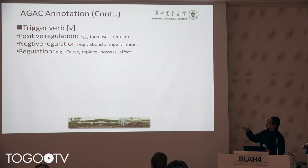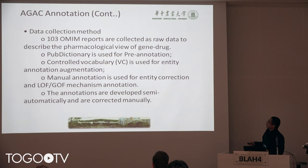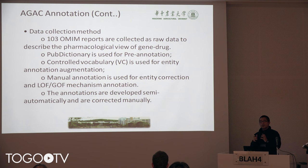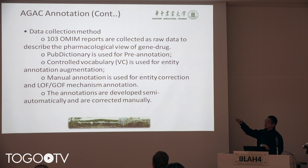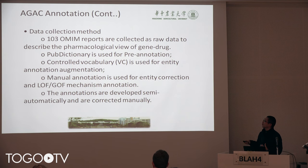These are trigger words. Currently we have a simple setting with three trigger word types: regulation, positive, and negative. These are our texts — in total there are 103 texts, which is a very small number. The reason for picking these is that our team actually published a paper four years ago based on this same text, but we only mined it; we didn't do annotation. So this time we want to do annotation to try to repeat our discovery using subsequent machine learning methods.